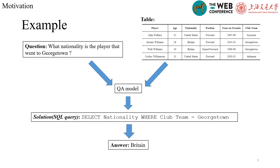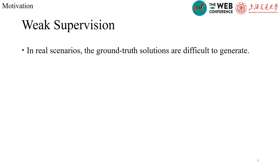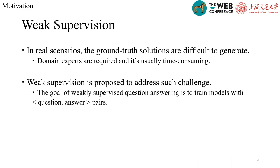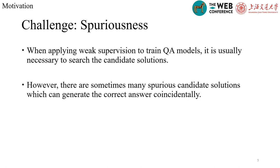Ideally, we need those solutions to train the QA model. However, in real scenarios, the ground-truth solutions are difficult to generate. Domain experts are required and it's usually time-consuming. So weak supervision is proposed to address such challenges. The goal of weakly supervised question-answering is to train models with only question-answer pairs. When applying weak supervision to train QA models, it is usually necessary to search the candidate solutions, since we don't have the correct solution for each question-answer pair.